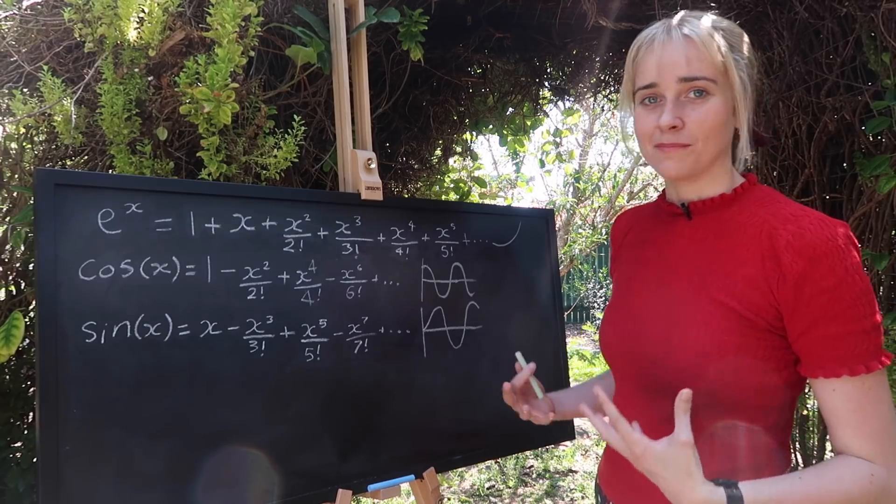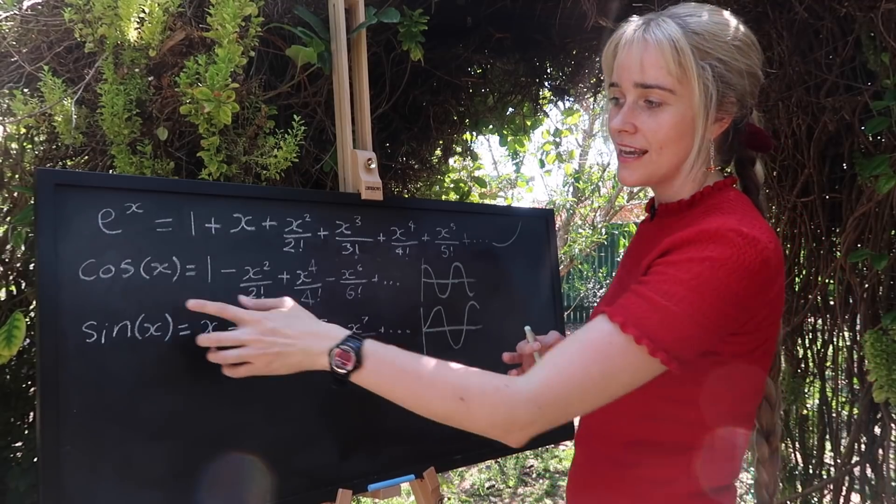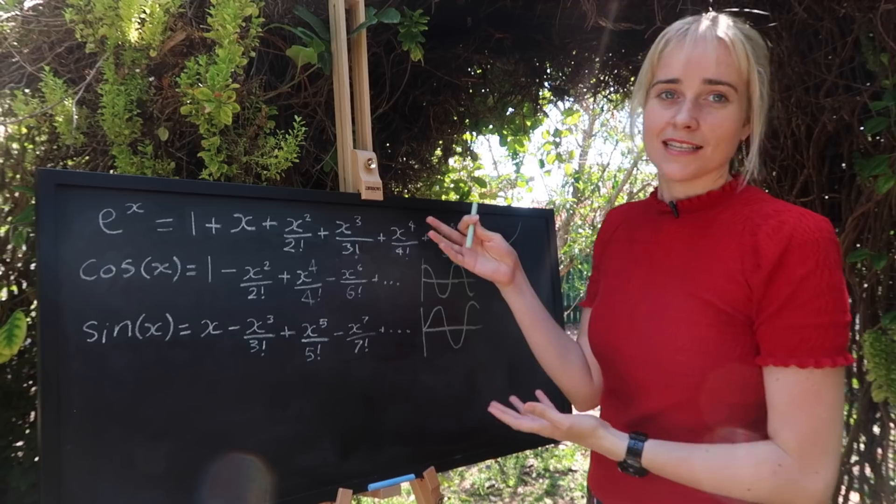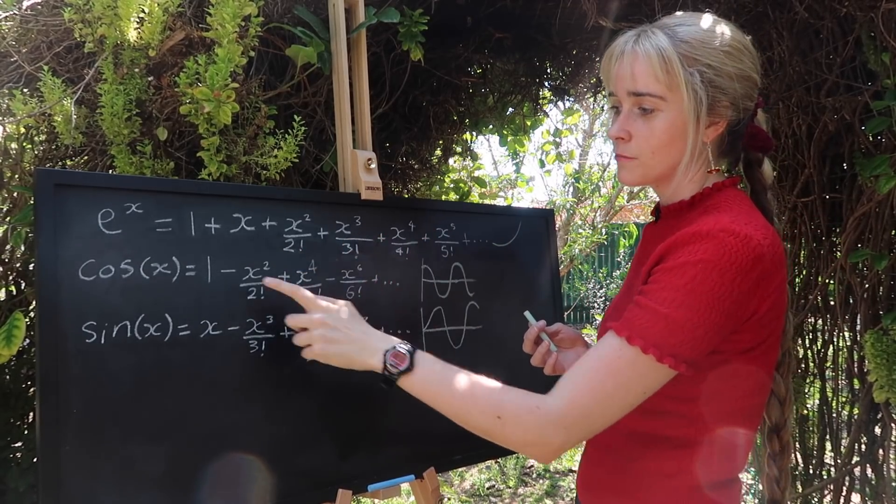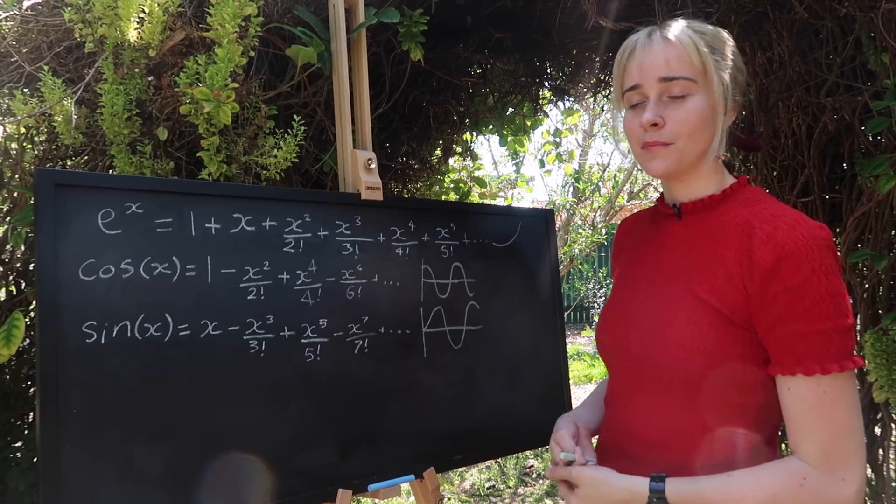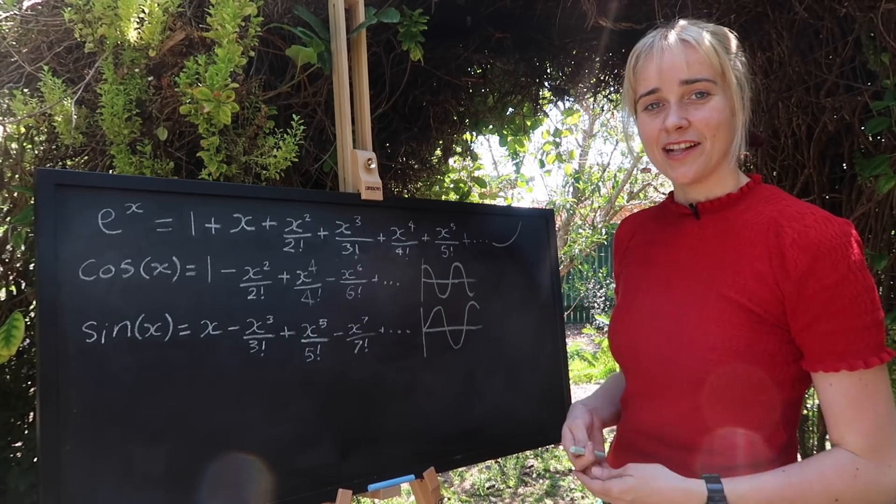So you can see that there might be some relation between these three people here. It's almost like they are one big family, but it doesn't seem to quite add up. Because if we were to add cos and sine, maybe we'd get something similar to e to the x. We'd get all of the right terms, but we'd still have these minus signs in here. So we can't just do a simple addition to relate these functions to this one up here. We need a little bit of help.